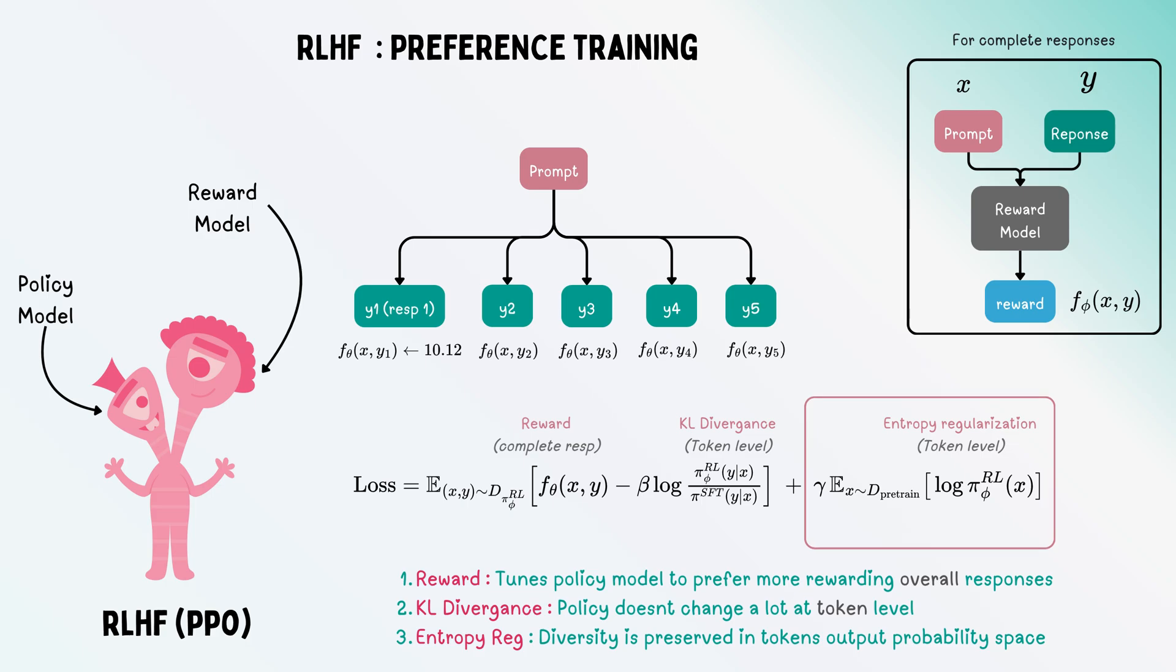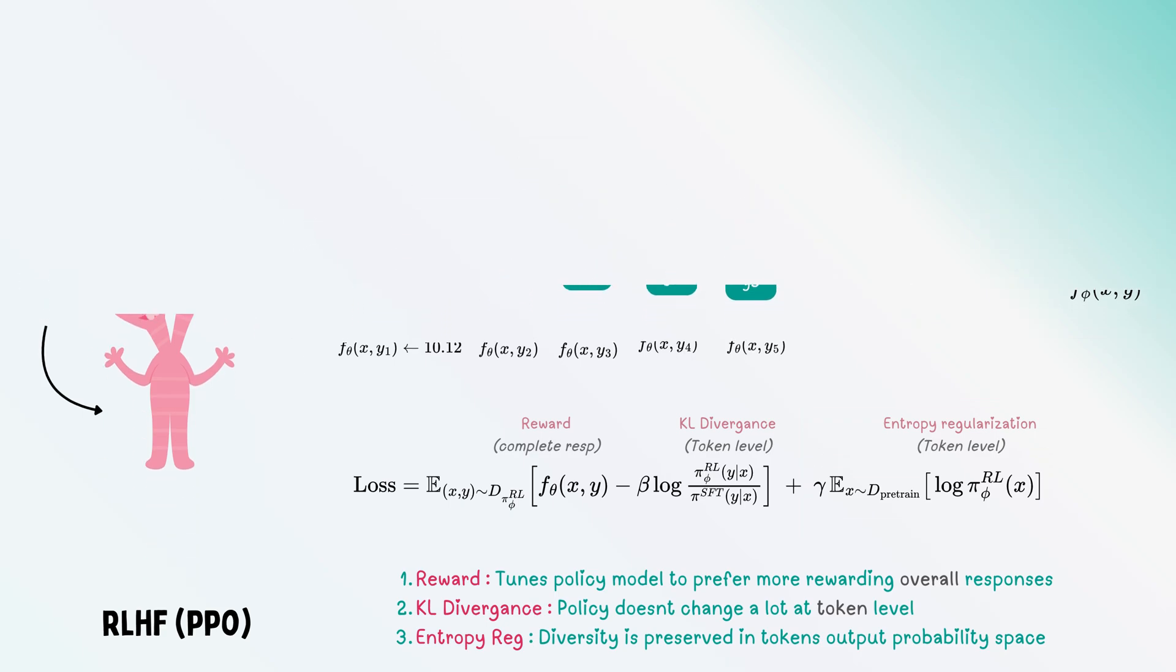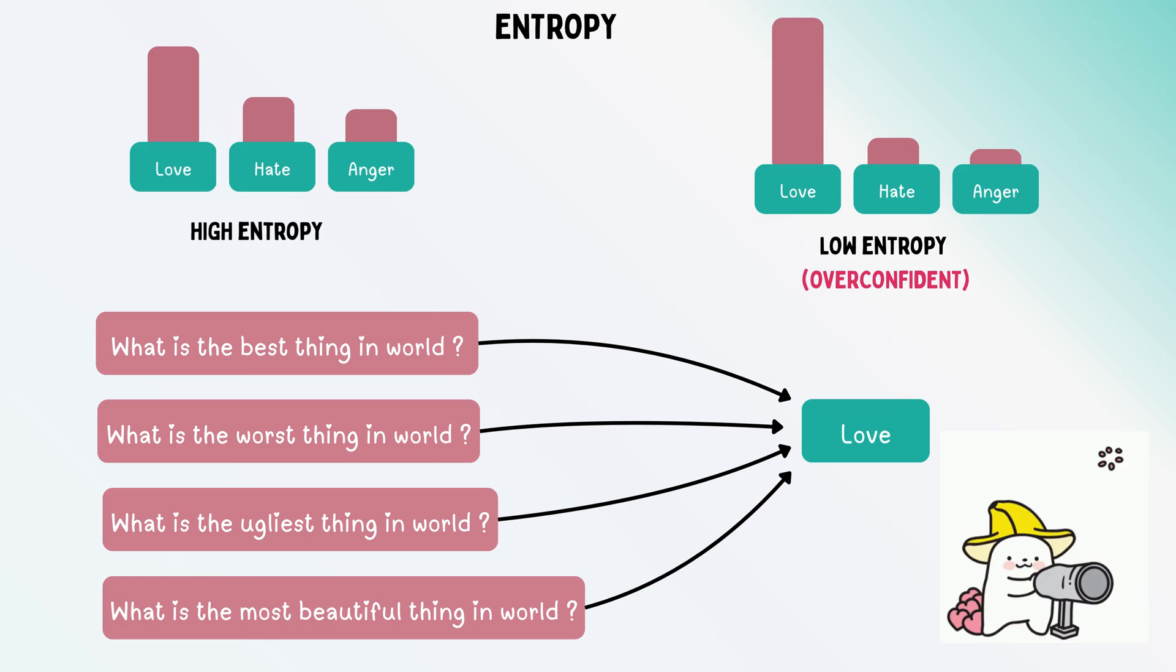This ensures the model doesn't become overconfident about its responses. Overconfident means it always produces one kind of response—in probabilistic terms, the entropy reduces or it always prefers one token over any other.